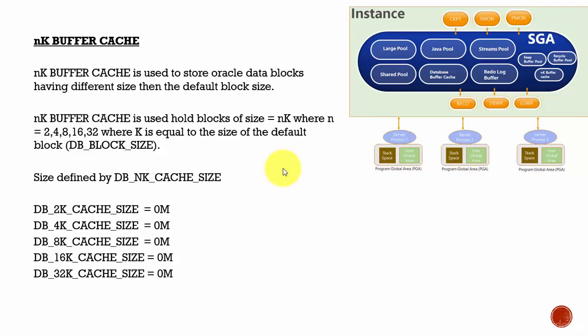What if you want to create a different block size? Can you create? Yes, you can create the data blocks with a different size. But if you want to store those data blocks in the memory, you need to configure a separate memory structure for those blocks. So this NK Buffer Cache is used to store the Oracle data blocks which are having a different size than the default block size.